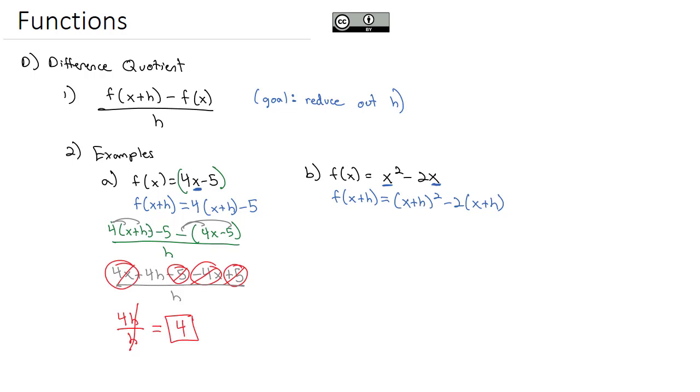Now we're ready to plug into our difference quotient formula, which takes the f of x plus h, which we just found out is x plus h squared minus 2 times x plus h. And then I subtract the function, making sure I put the function in parentheses of x squared minus 2x. And then we put the whole thing over h.